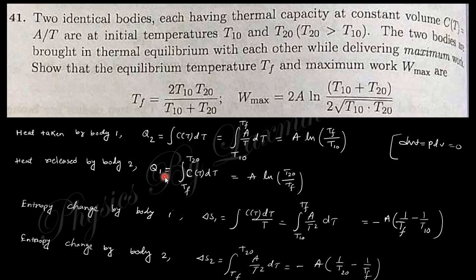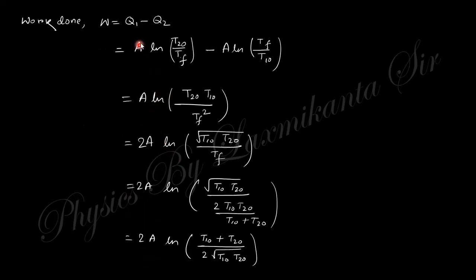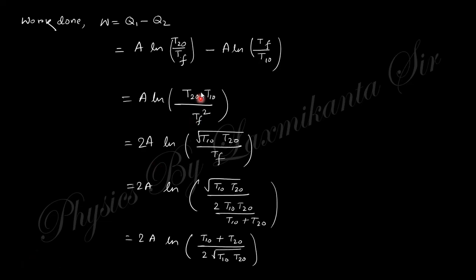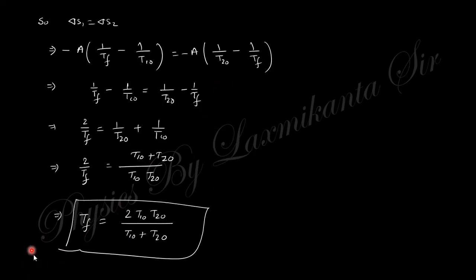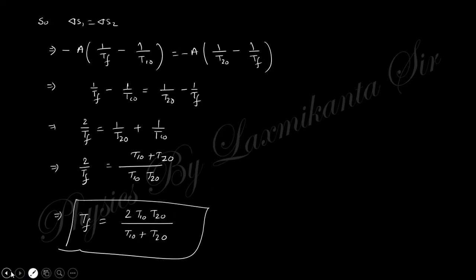The entropy change for body one is ΔS = ∫dQ/T, and similarly for body two. Since the total entropy change of the universe is zero for maximum work, these two entropy changes are equal, from which we find the final temperature Tf. The maximum work done is W = Q₁ − Q₂; substituting the value of Tf into this expression gives the maximum work done.